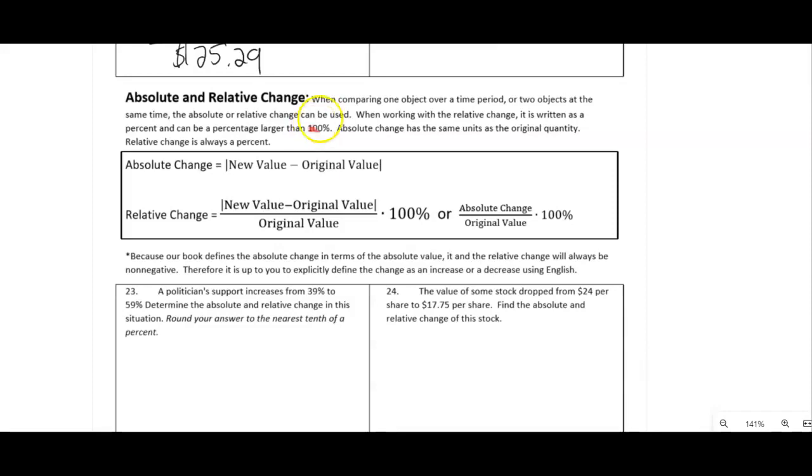So that's not possible with the percent as the partial out of the total. That's the most 100%. These can be larger than 100%, and they can be negative, at least with many books, not this book. Absolute change has the same units as the original quantity. Relative change is always a percentage. So this book uses the absolute value for the absolute change. Many books do not. Using the absolute value, your answer will always be positive. And so then it's up to you if the values are going down to say it's a decrease. Or if it's going up to say it's an increase with English versus just with the sign in front of the number.